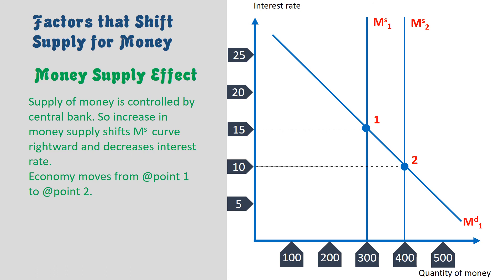Supply of money is controlled by the central bank. An increase in money supply shifts the MS curve rightward and decreases the interest rate. The economy moves from point 1 to point 2.